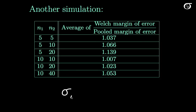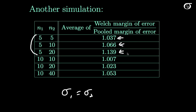In all of these situations, the population variances are equal and the pooled variance approach would be better. Looking at a few different sample sizes, the Welch procedure has a slightly larger margin of error, but it's not that much bigger. We'd rather have the pooled variance margin of error, which is a little smaller, and as sample sizes get bigger, it becomes even less of an issue. So we're giving up a little bit using the Welch procedure, but not a whole lot.